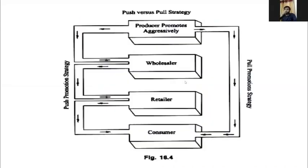In the push strategy, the producer promotes aggressively to wholesalers, wholesalers promote aggressively to retailers, and retailers push the product to consumers. In the pull model, producers directly promote the product to consumers, which creates direct awareness. So these are the two kinds of promotional blend models.